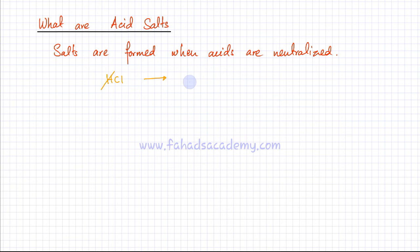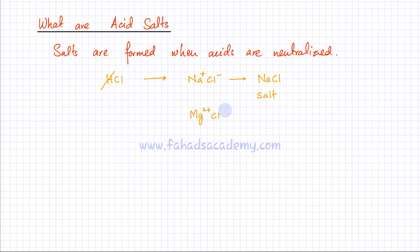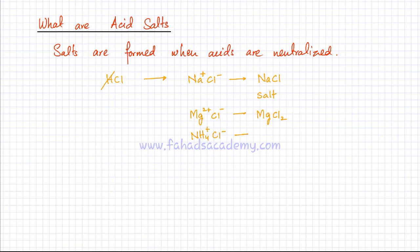For example, if I replace the H⁺ with Na⁺, and Cl is minus one, it's going to form NaCl, which is a salt because it can no longer produce an H⁺ ion. If I had used magnesium instead, the formula would be MgCl₂. Or I could have used ammonium ion, also a positive ion, so replacing H with NH₄⁺ gives NH₄Cl, which is an ammonium salt. This is how salts are formed when an acid is neutralized.